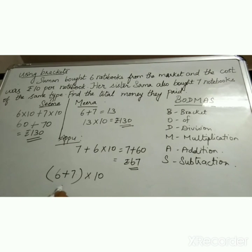So 6 plus 7 is 13, 13 into 10, which is nothing but rupees 130. So in order to avoid confusion we are using brackets. Clear children?